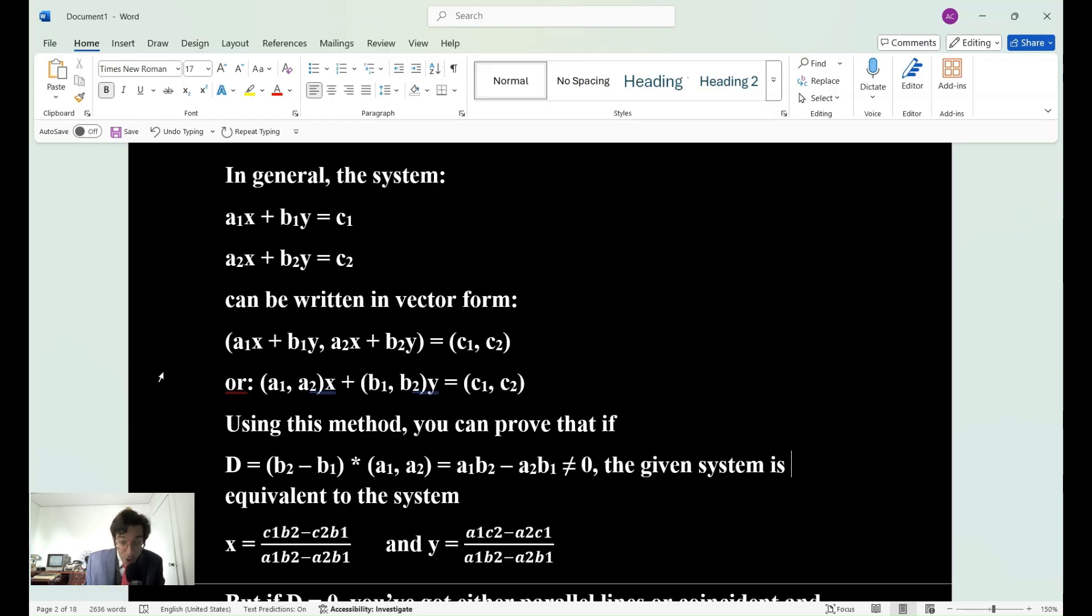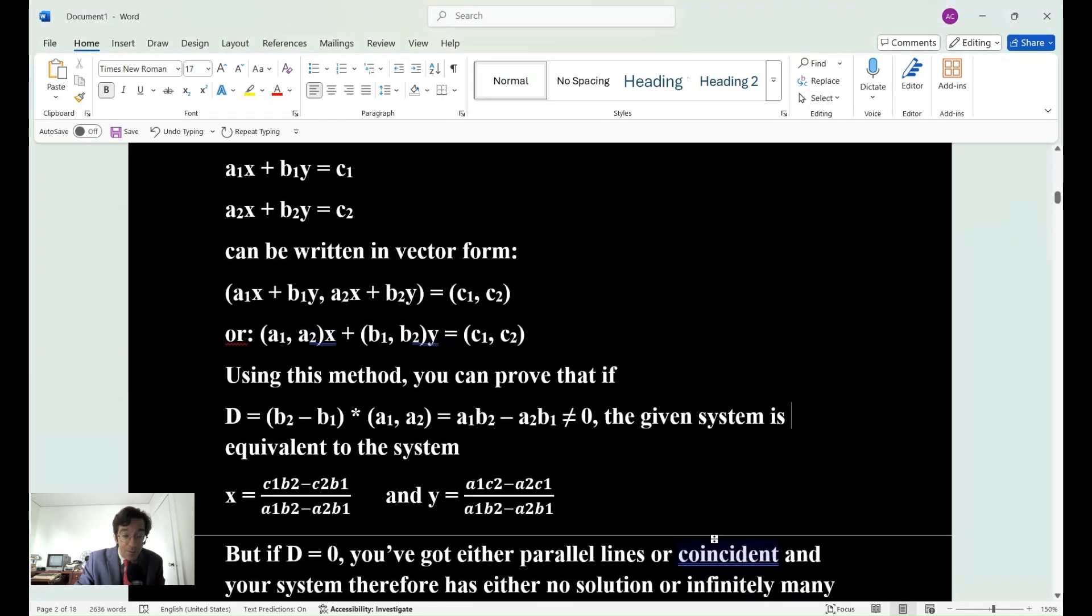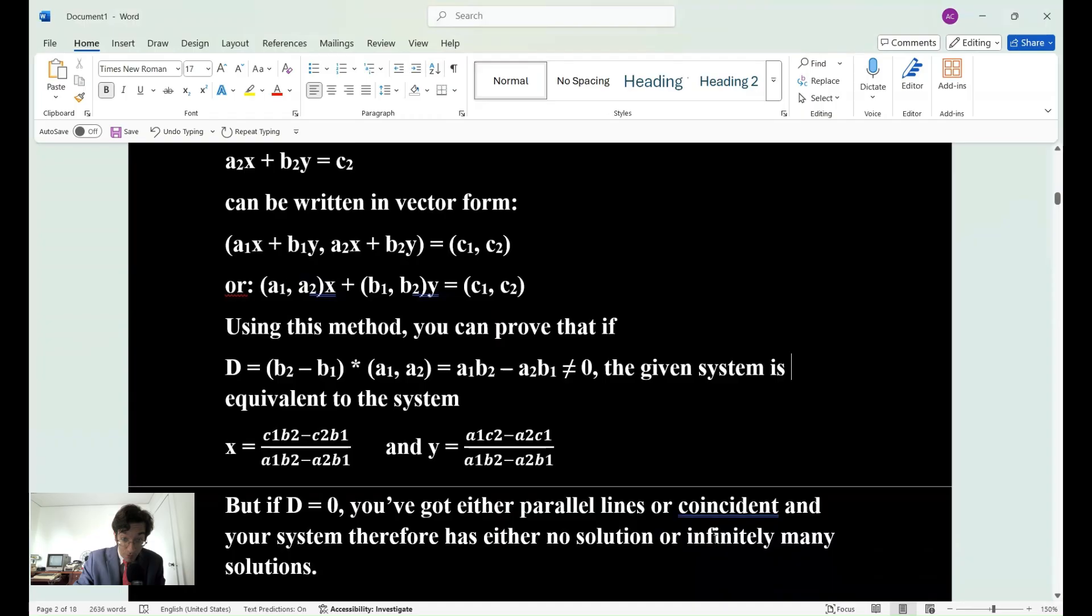It's important to note if D equals zero, then you've got either parallel lines or coincidence, we call them. You don't learn that in school, I know that for a fact. They don't use that term, but we do. And your system therefore has either no solution or infinitely many solutions. And now we have to talk about one more theorem, which is the determinant. That's a separate theorem.